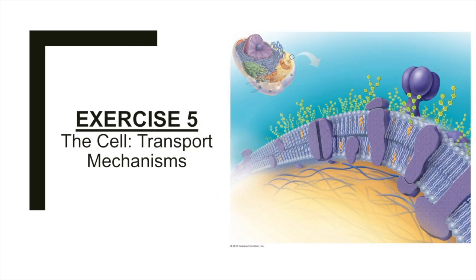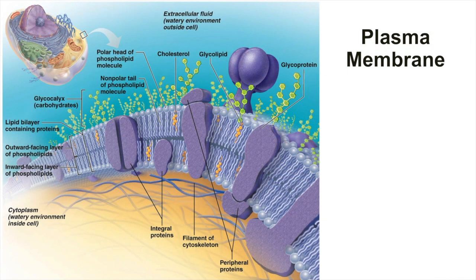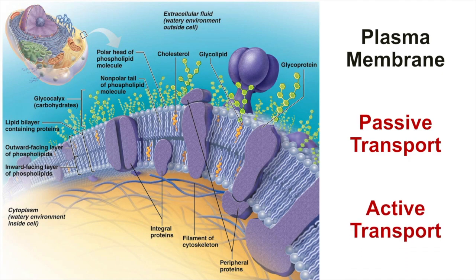Throughout exercise five, we'll explore cell transport mechanisms and permeability. Like we discussed earlier, the plasma membrane of the cell is selectively permeable — it allows nutrients to enter the cell but keeps out undesirable substances. Valuable cell proteins and other substances are kept within the cell, while wastes pass to the exterior. Transport through the plasma membrane occurs in two basic ways: via passive processes and active processes. During passive transport, a concentration gradient or pressure difference drives movement. During active transport, the cell must provide energy in the form of ATP to power the transport process.